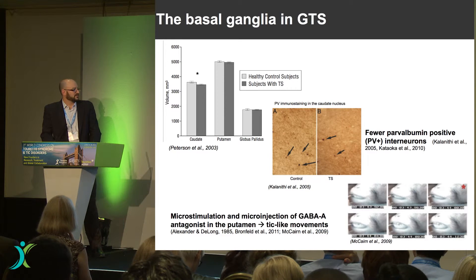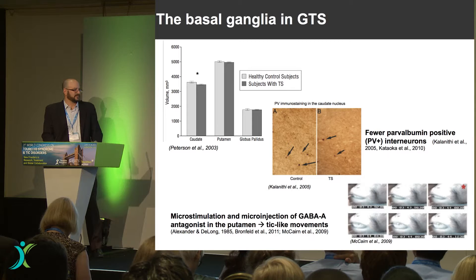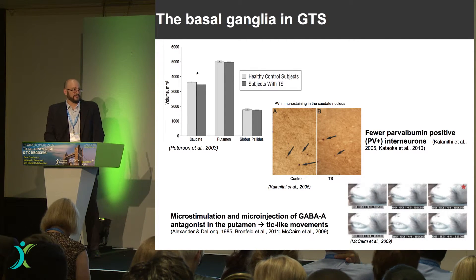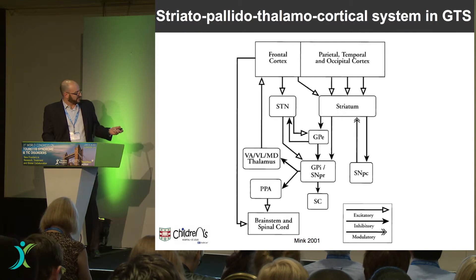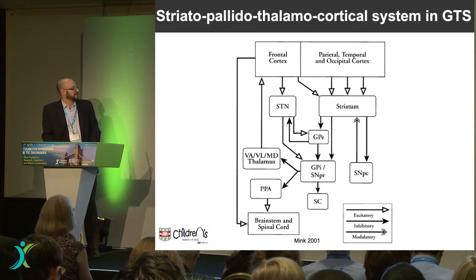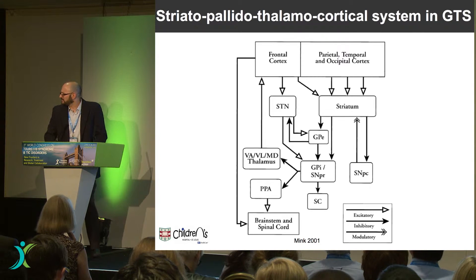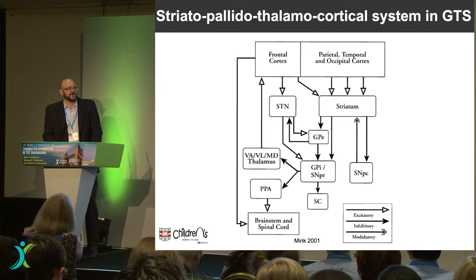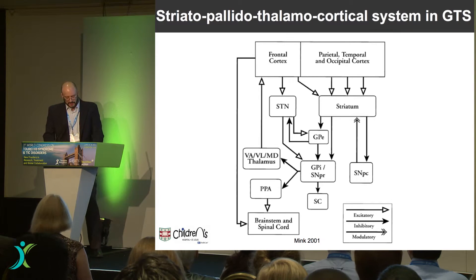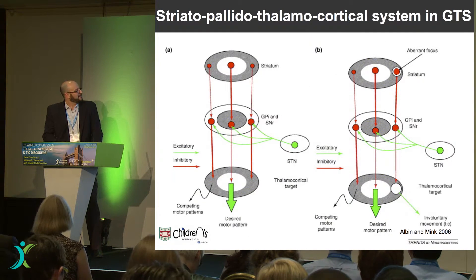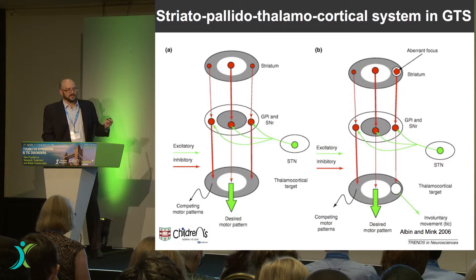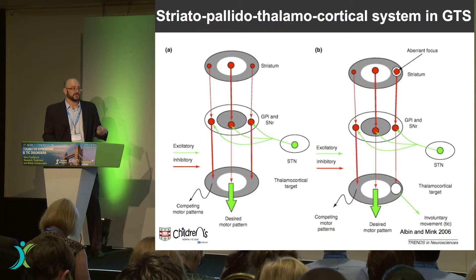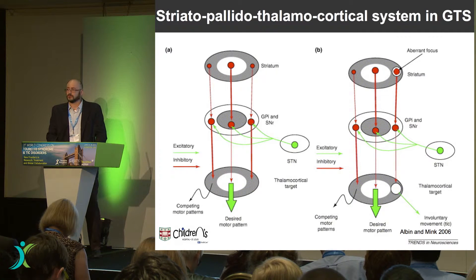The basal ganglia is implicated in Tourette's — there's lots of evidence from imaging, postmortem pathological studies, and beautifully done neurophysiological studies. This has allowed us to have diagrams like this one generated by John Mink, modified from work by Tom Thatch, showing the complex interaction between cortex, striatum, pallidum, and thalamus. It has allowed people like Roger Elbin and John Mink to come up with hypotheses about how you might get involuntary movements by disinhibiting the striatum, creating an excitatory focus. But this is not a specific model — it doesn't tell you the difference between, say, a tic, a chorea, or other dyskinesia.